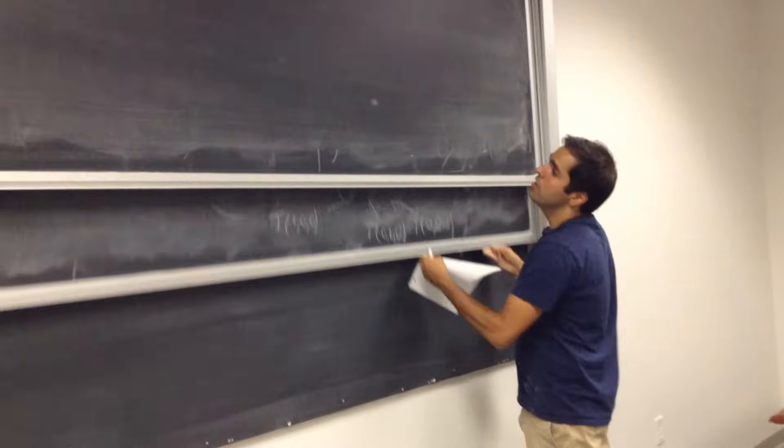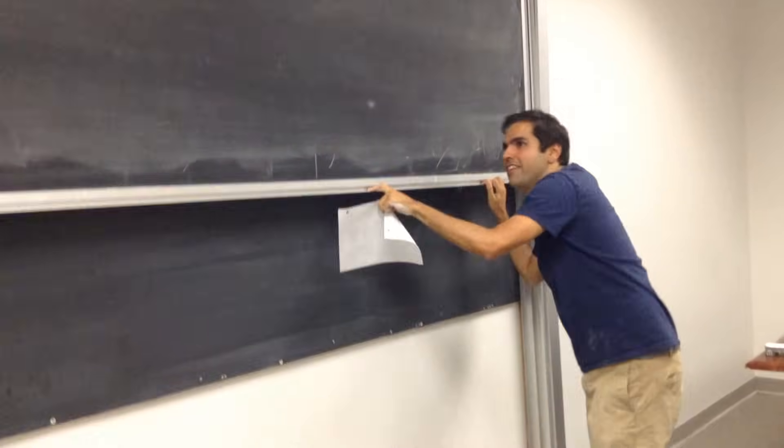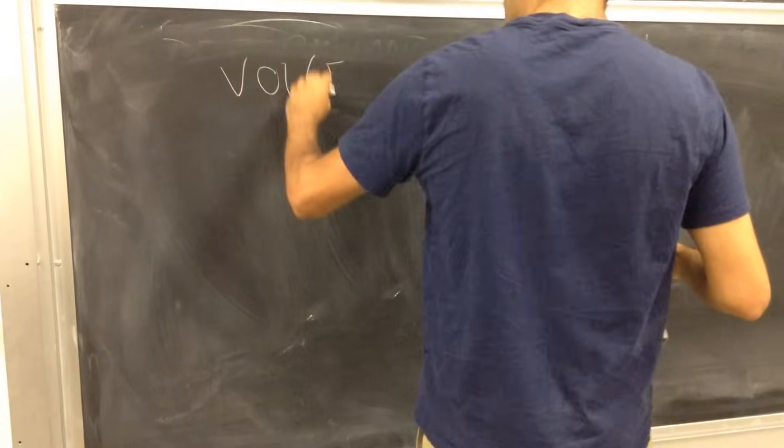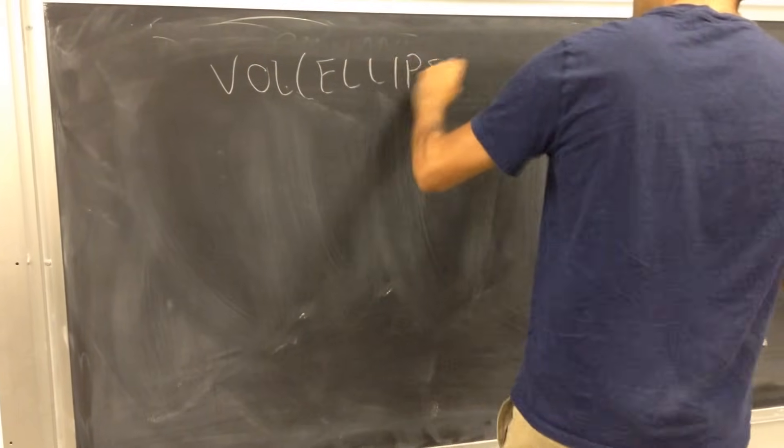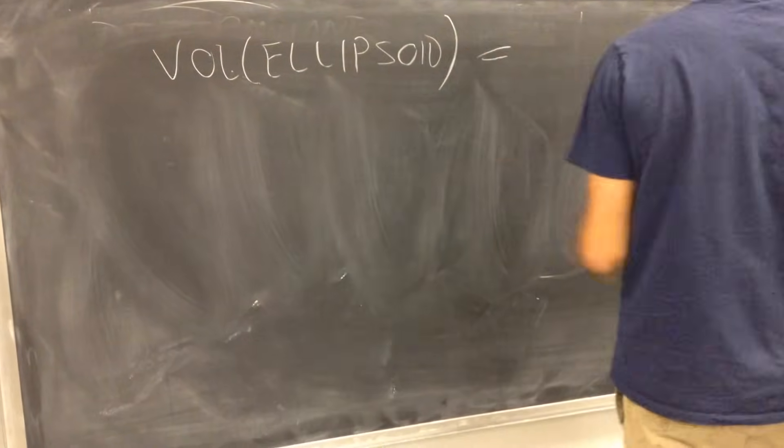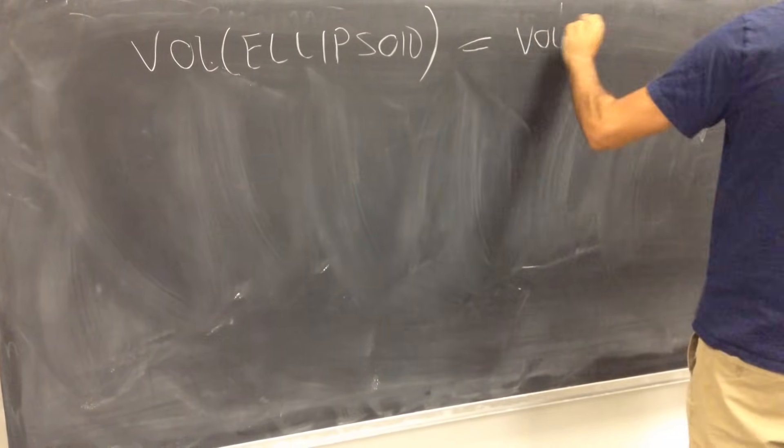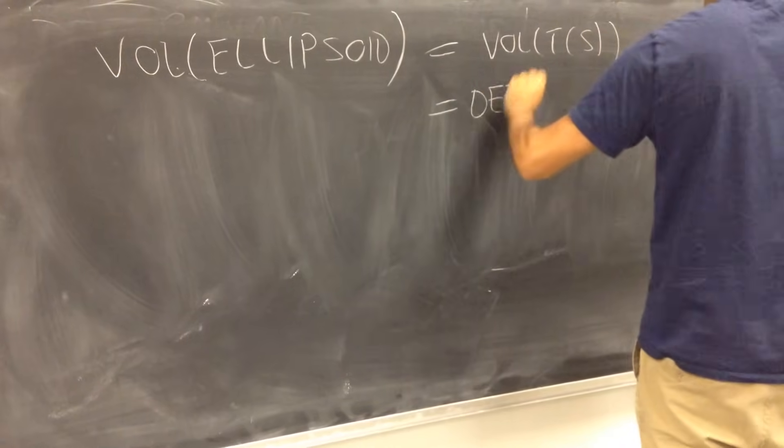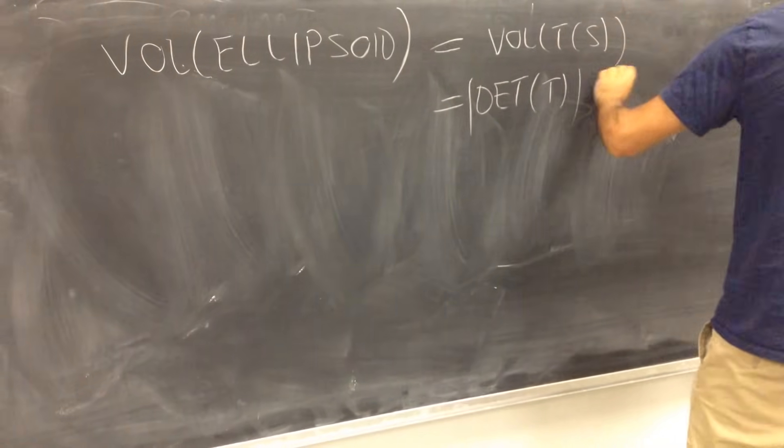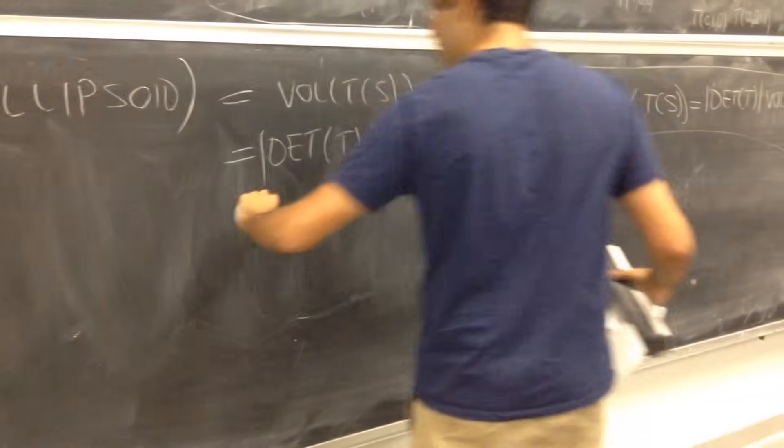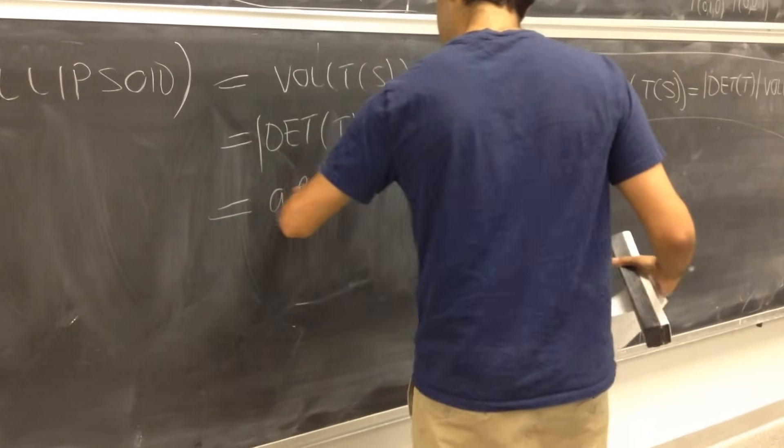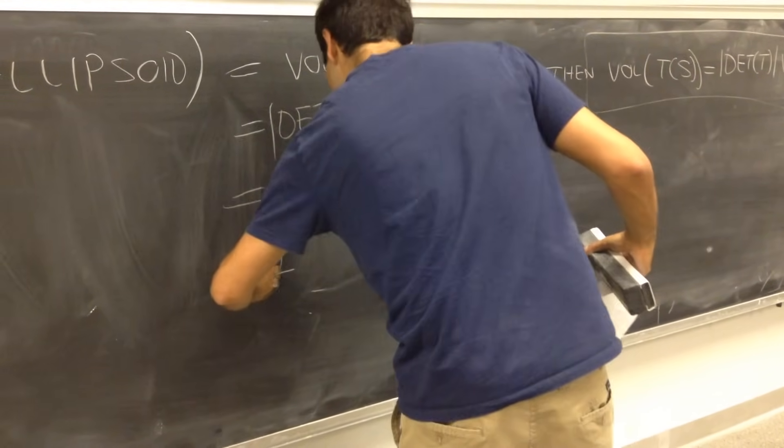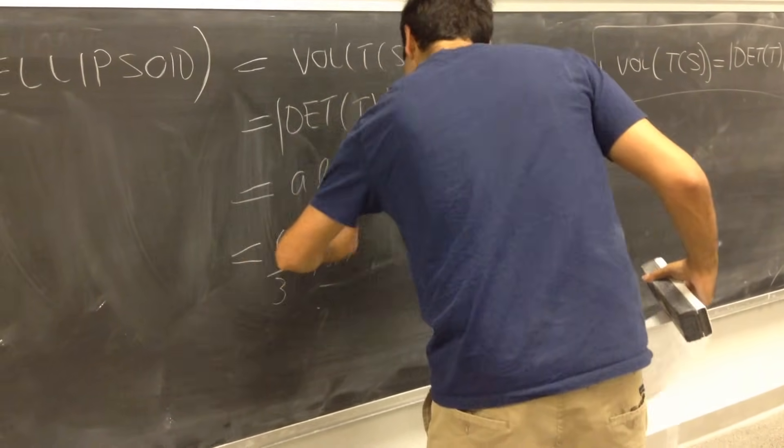all we need to do is just multiply them together. So, here, volume of ellipsoid, that's volume of T of S, and that's determinant of T, so we have the absolute value, volume of S, and that's a, b, c, 4 thirds pi. Okay, 4 thirds pi, a, b, c.